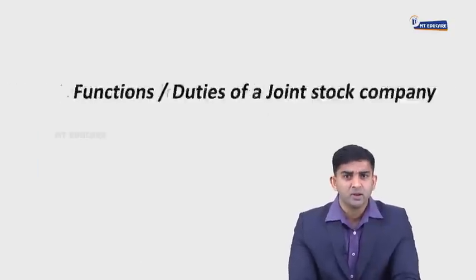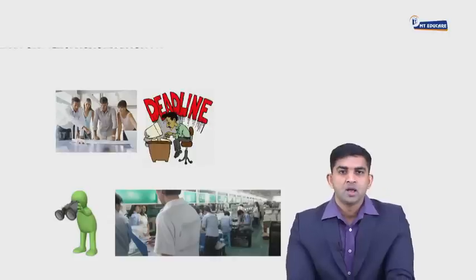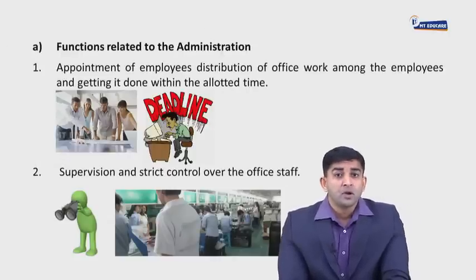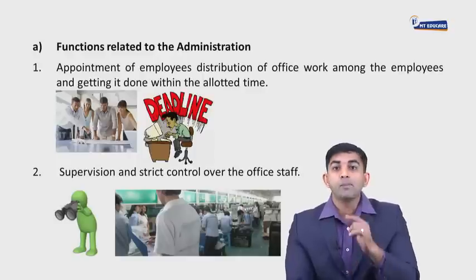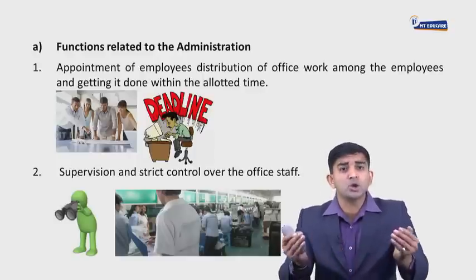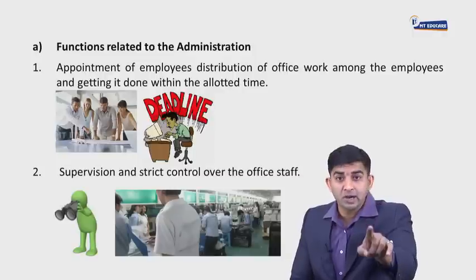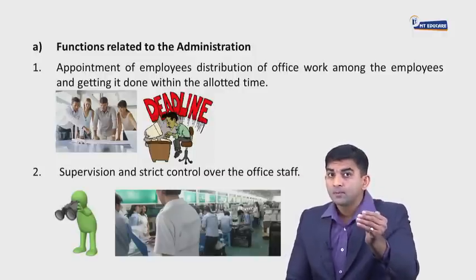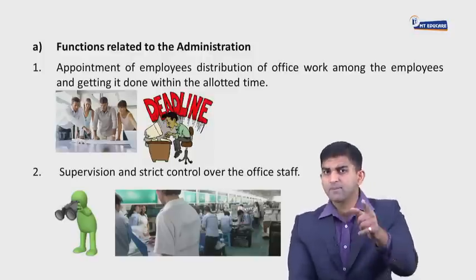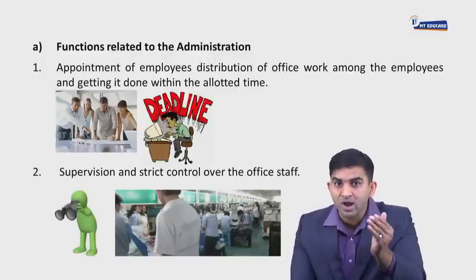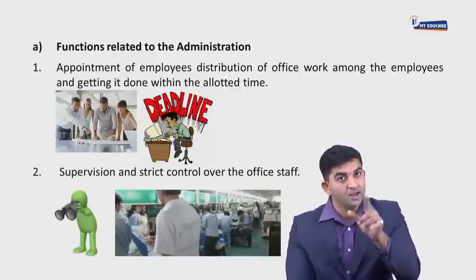Now let's start with the functions and duties of a secretary of a joint stock company. Functions related to administration: Point one — appointment of employees, distribution of office work among employees, and getting it done within the allotted time, ensuring work is done effectively and within stipulated time. Point two — supervision and strict control of office staff to ensure work is carried out systematically and within a specific time limit.